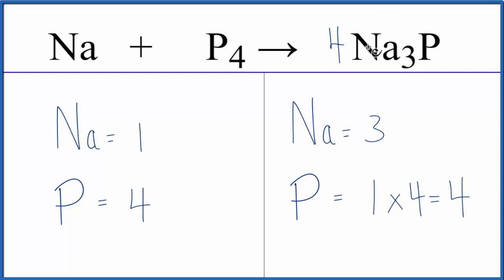But then three times four, that gives us twelve sodium atoms. But like we said, sodium is by itself, so we can just put a coefficient of twelve in front of it. One times twelve, that gives us twelve, and we're done.